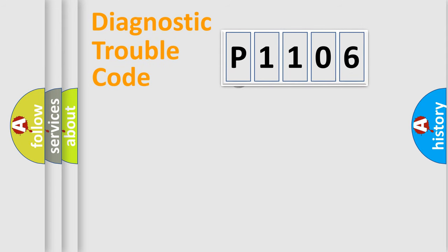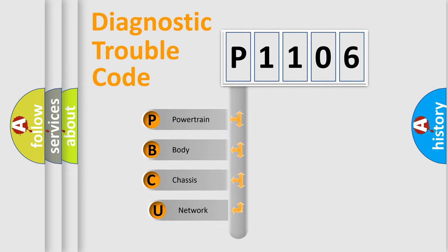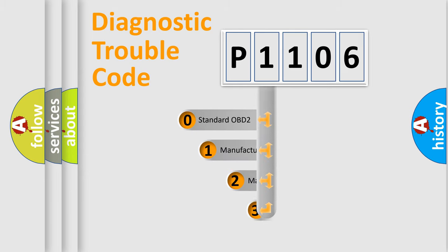First, let's look at the history of diagnostic fault code composition according to the OBD2 protocol. We divide the electric system of an automobile into four basic units: powertrain, body, chassis, and network. This distribution is defined in the first character of the code.